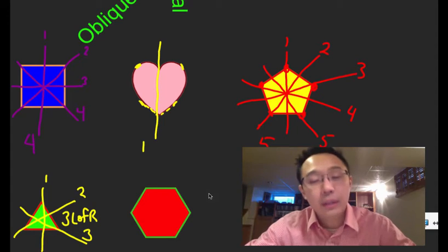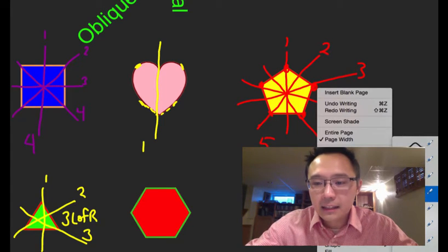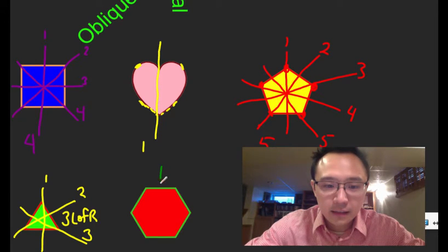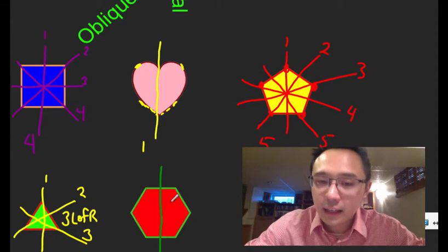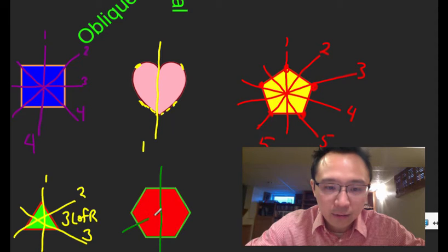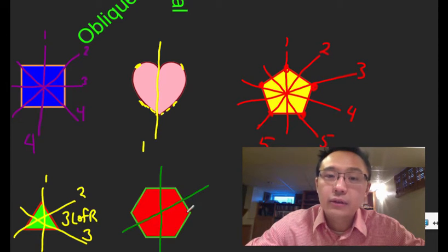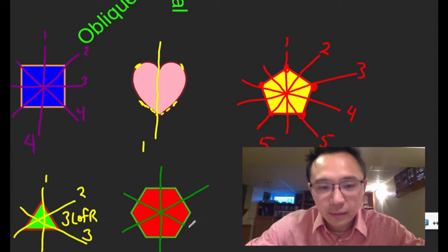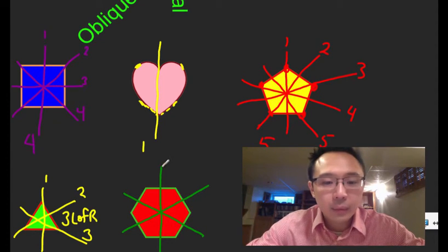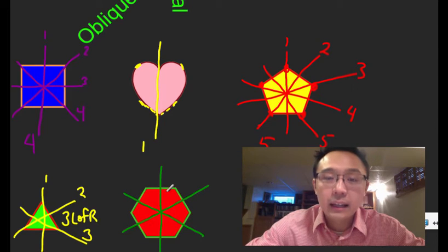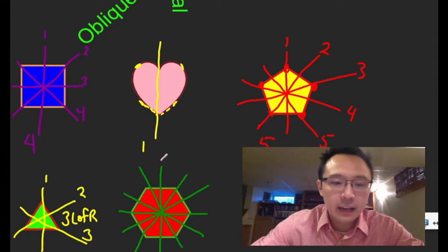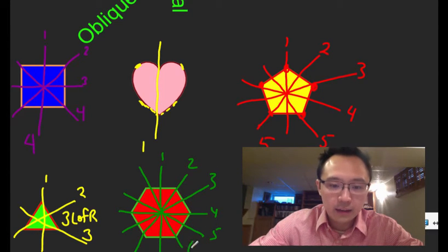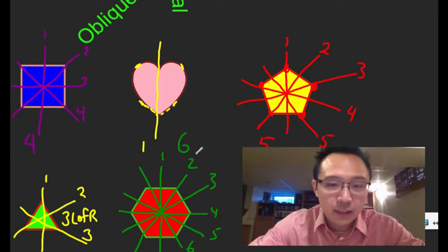This shape has six sides — a hexagon. You can probably guess we'll have six lines of reflection. We draw lines through the flat edges — that covers three — and then lines through the points, covering the remaining three. Counting them all up: one, two, three, four, five, six. Six lines of reflection for a hexagon.